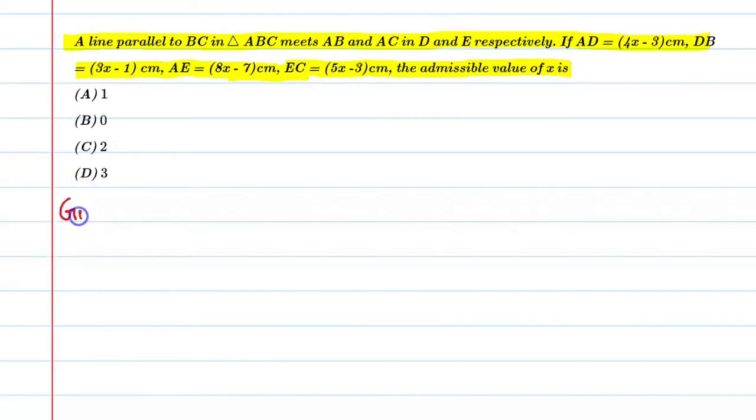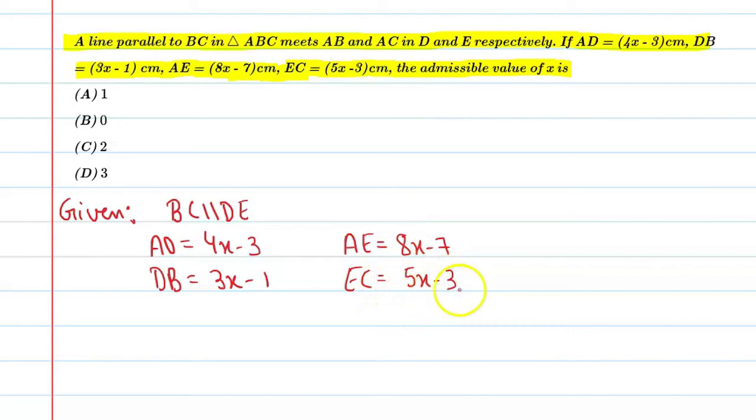Given is BC is parallel to DE. We'll make this clear with a figure in a moment. BC is parallel to DE. And AD equals 4x minus 3, DB equals 3x minus 1, AE equals 8x minus 7, and EC equals 5x minus 3. Alright.